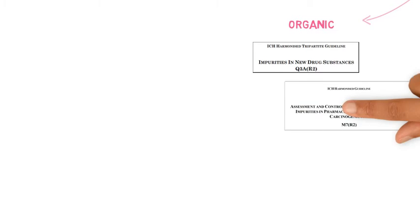Organic impurities have their control described in ICH Q3A, and another guideline which is applicable to them is ICH M7, the guideline for control of mutagenic impurities.